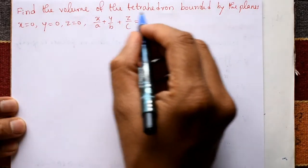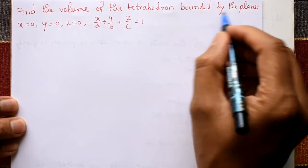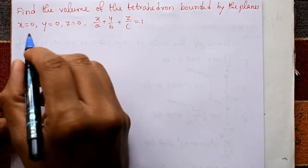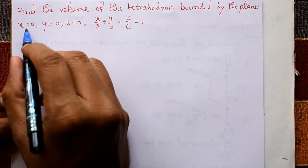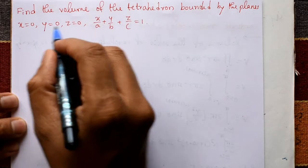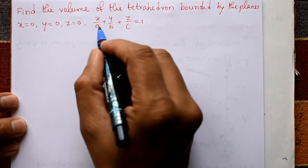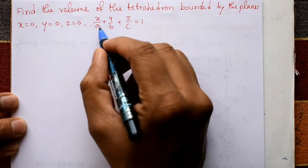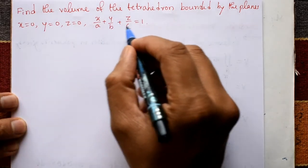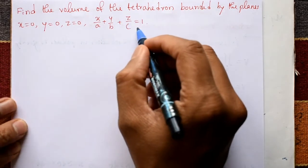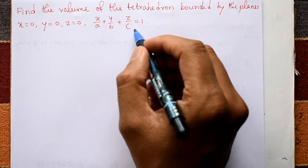Find the volume of a tetrahedron bounded by the planes x = 0, y = 0, z = 0, and x/a + y/b + z/c = 1.